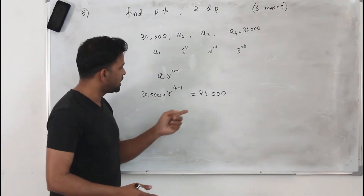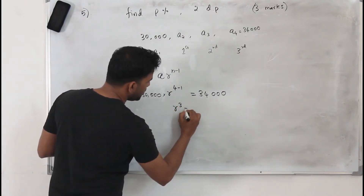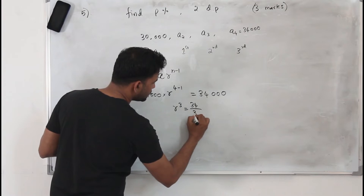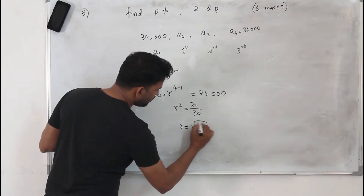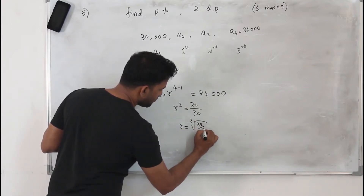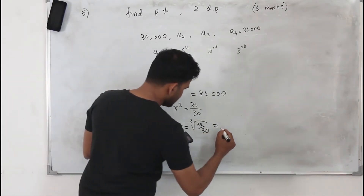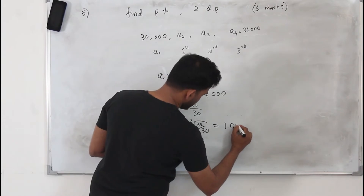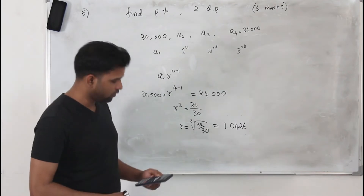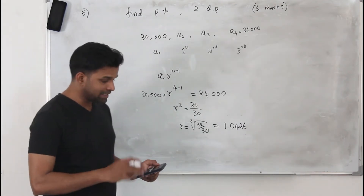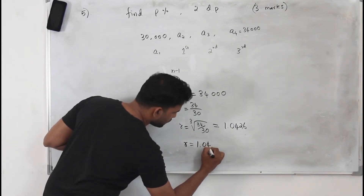Simplify this and take the logarithm or rearrange to find R. Bring the 30,000 across, so R³ = 34/30. Therefore R = cube root of (34/30), which gives R ≈ 1.0426. That is our common ratio — that is not the final answer, that is the common ratio R = 1.0426.